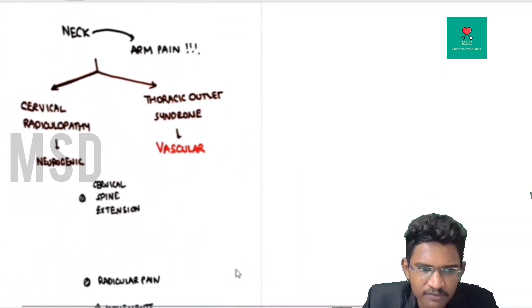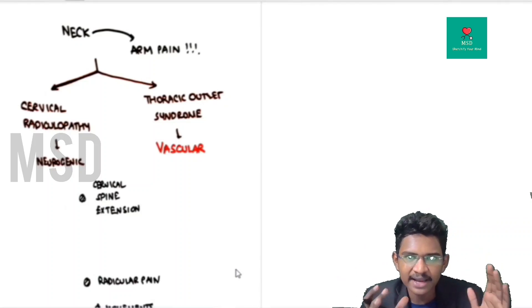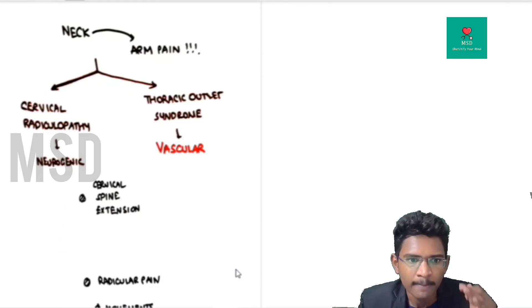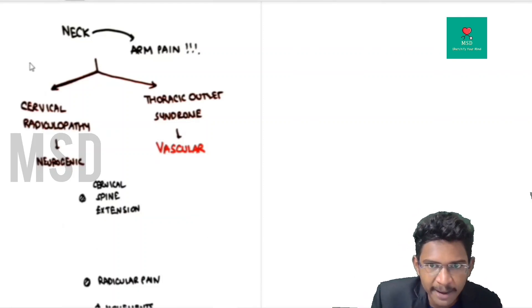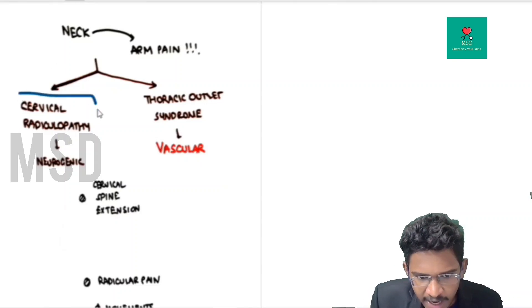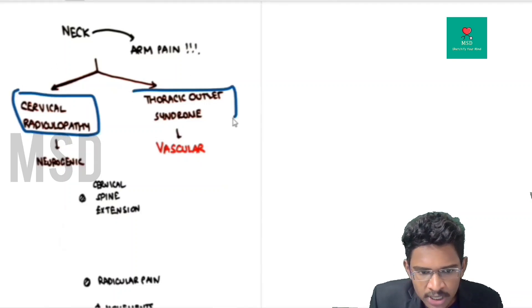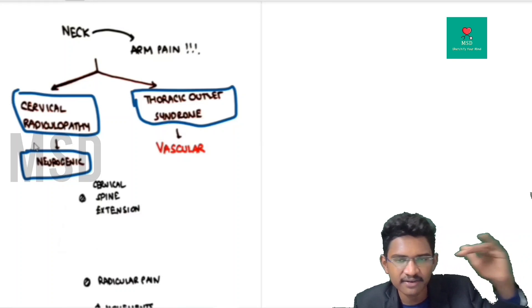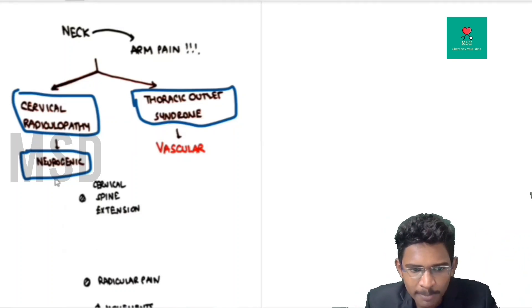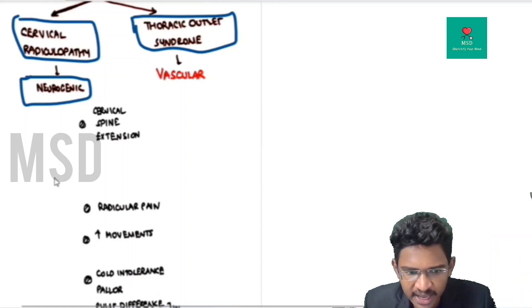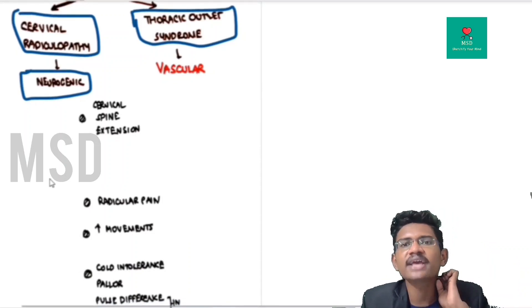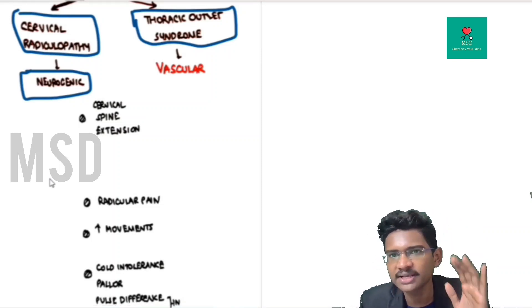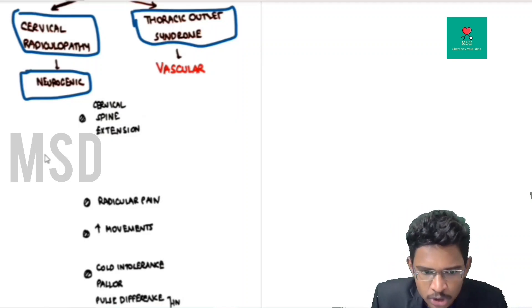MI can present with isolated arm or neck pain due to radiation. Differential diagnoses include cervical radiculopathy and thoracic outlet syndrome. In cervical radiculopathy, neurogenic pain results from compression of nerve roots at the cervical vertebral exit, causing radiculopathy radiating to the corresponding area. Extending the neck reproduces or exacerbates the pain, and palpation of the area may elicit tenderness.